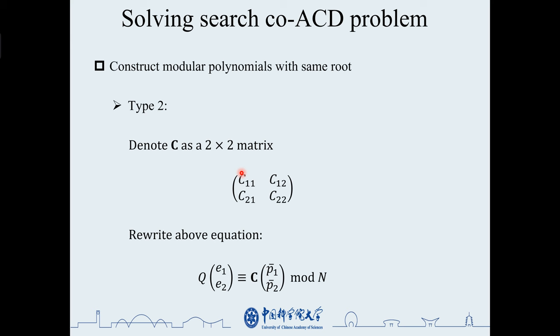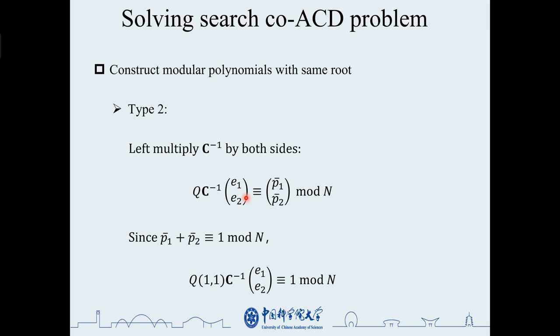Since p1 bar plus p2 bar is congruent to 1 under modulo n, we want to put the vector pi bar on one side, so left multiply the inverse of C. We assume that matrix C is invertible in modular ring Zn. Otherwise, a non-trivial factor of n can be easily obtained.